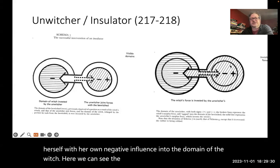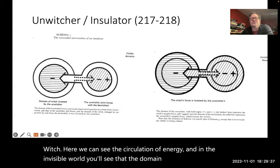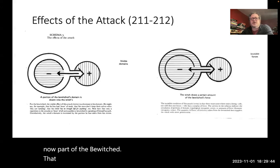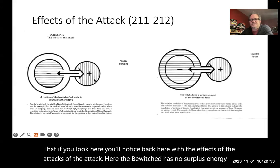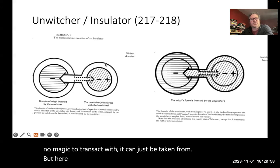Here, we can see the circulation of energy. And in the invisible world, you'll see that the domain of the unwitcher is now part of the bewitched set. If you look here, you'll notice back here with the effects of the attack, the bewitched has no surplus energy. No magic to transact with. It can just be taken from. But here, the surplus energy of the unwitcher is now a part of the bewitched.